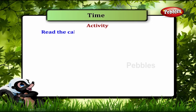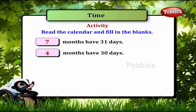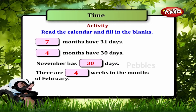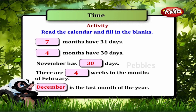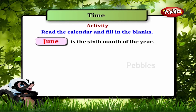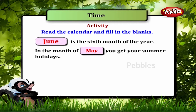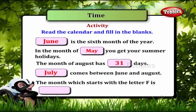Read the calendar and fill in the blanks. 7 months have 31 days. 4 months have 30 days. November has 30 days. There are 4 weeks in the month of February. December is the last month of the year. June is the 6th month of the year. In the month of May you get your summer holidays. The month of August has 31 days. July comes between June and August. The month that starts with the letter F is February.